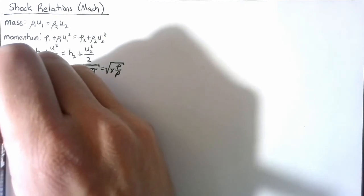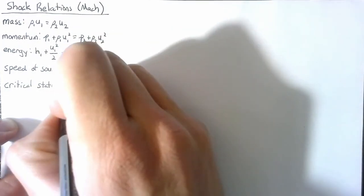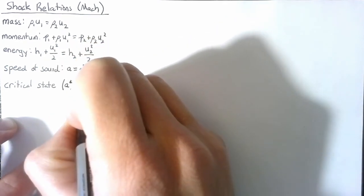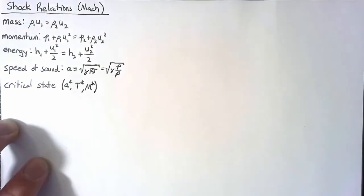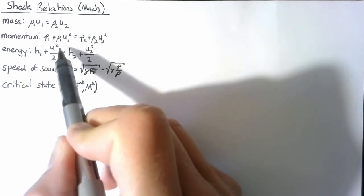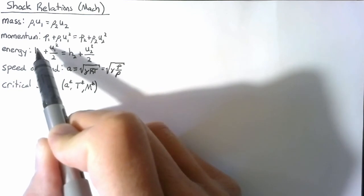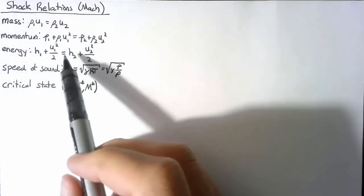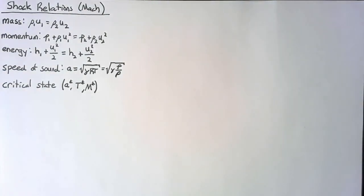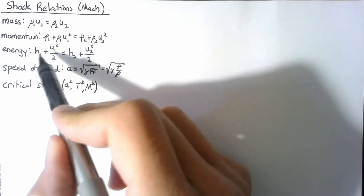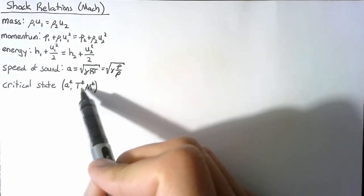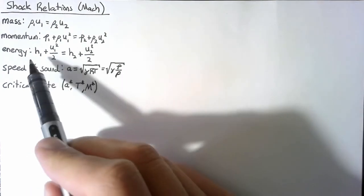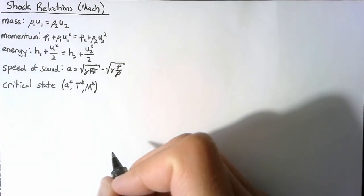The next thing we need is the concept of a critical state. We've talked about stagnation before, where we take a flow state and reduce its speed isentropically and adiabatically until it's stopped — taking all the energy in kinetic energy form and transforming it into internal energy. This is a similar process. Instead of moving things to where the velocity is zero, we're going to move the velocity until it reaches the speed of sound, wherever it happens to be.